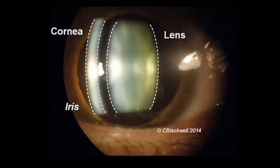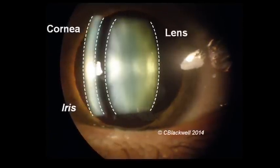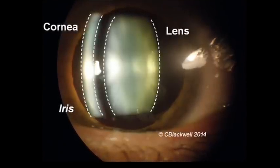You can see the curved shape and thinness of the cornea, separated by a space, then the rounded shape and thickness of the normal lens.